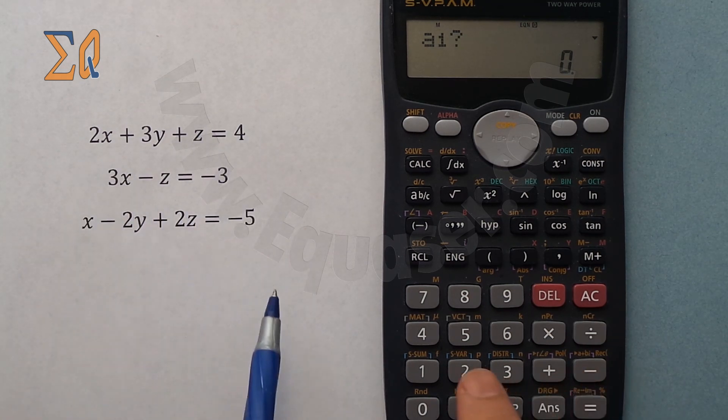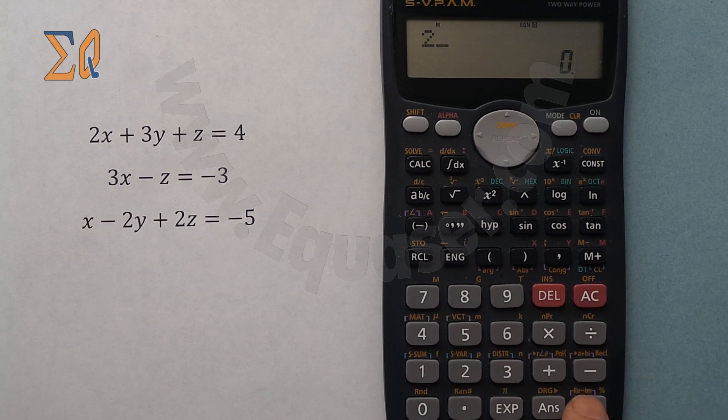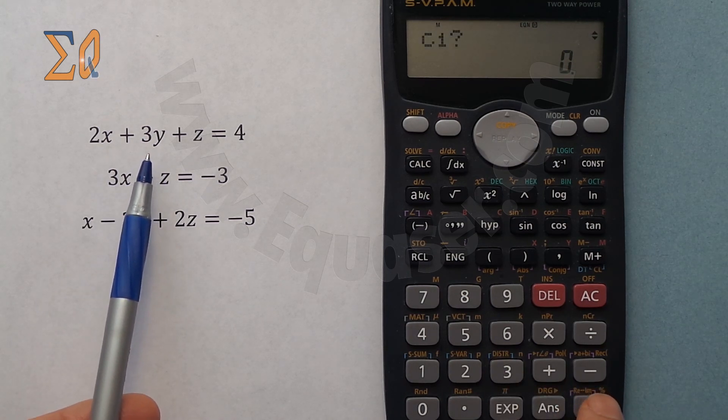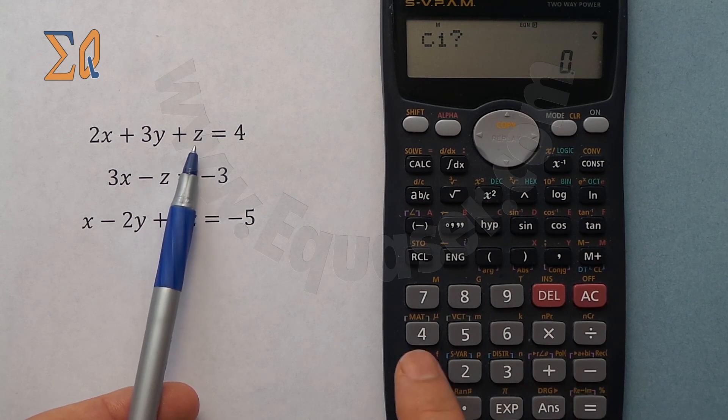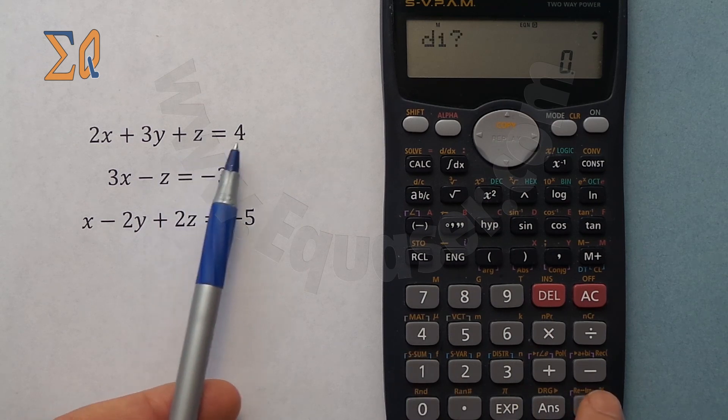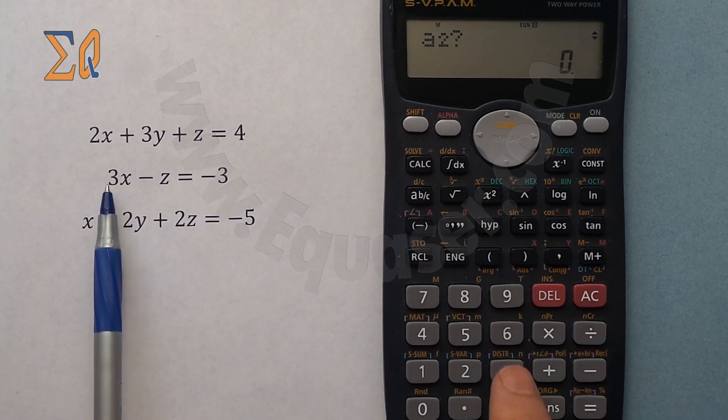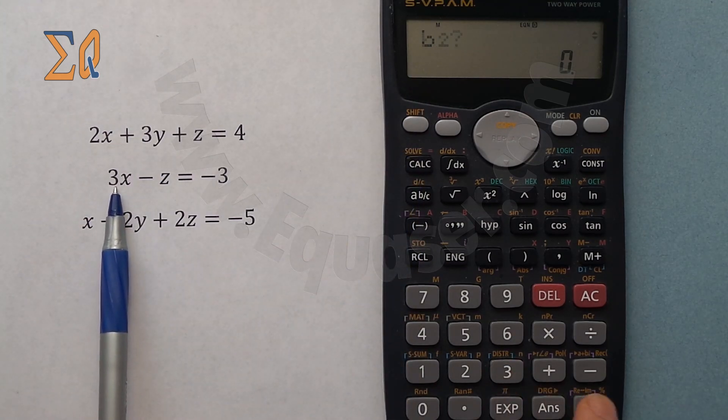So that is 2 and then equal sign. I press 3 and then equal sign, and then for z that's 1 and then equal sign. For d that's 4 equal sign, a2 for equation 2, 3 equal sign.